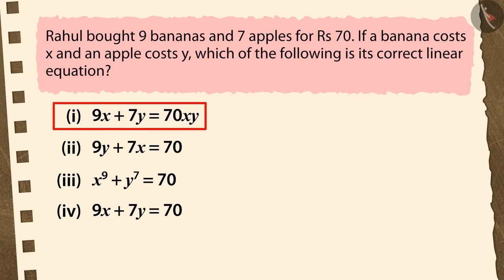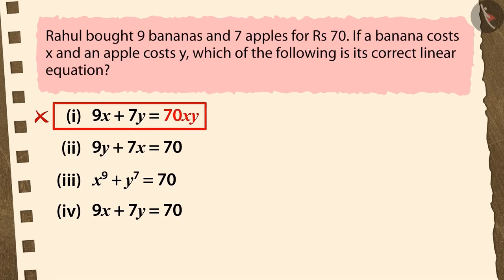If you have chosen the first option, it is a very good effort. But this is not true. The total price of bananas and apples is Rs. 70. So, 70XY will not come as the total price after equal sign.